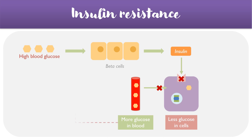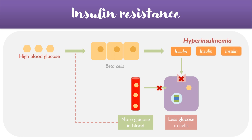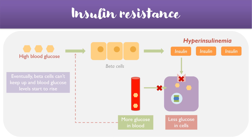This entire process repeats and the beta cells try to produce more insulin, resulting in hyperinsulinemia in an attempt to drive glucose into cells. While this does work to some extent, eventually there comes a point where the beta cells cannot keep up and blood glucose levels continue to rise. This is usually the point where we want to initiate treatment to prevent complications of the condition.